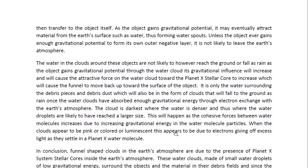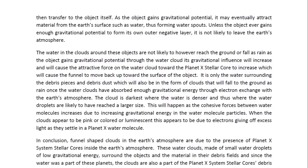The gravitational potential can then transfer to the object itself. As the object gains gravitational potential, it may eventually attract material from the Earth's surface, such as water, thus forming water spouts. Unless the object ever gains enough gravitational potential to form its own outer negative layer, it is not likely to leave the Earth's atmosphere. As the object gains gravitational potential through the water cloud, its gravitational influence will increase and will cause the attractive force on the water cloud toward the Planet X stellar core to increase, which will cause the funnel to move back up towards the surface of the object.